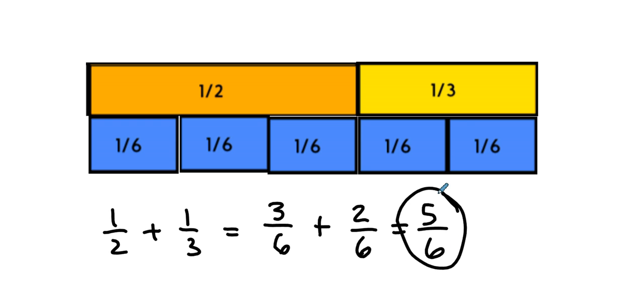So the rule that we have where you got to get a common denominator, that's not arbitrary. That allows us to compare across the fractions using a smaller piece that's useful in both cases. So this whole deal of you got to get a common denominator when you add or subtract, it comes from somewhere.